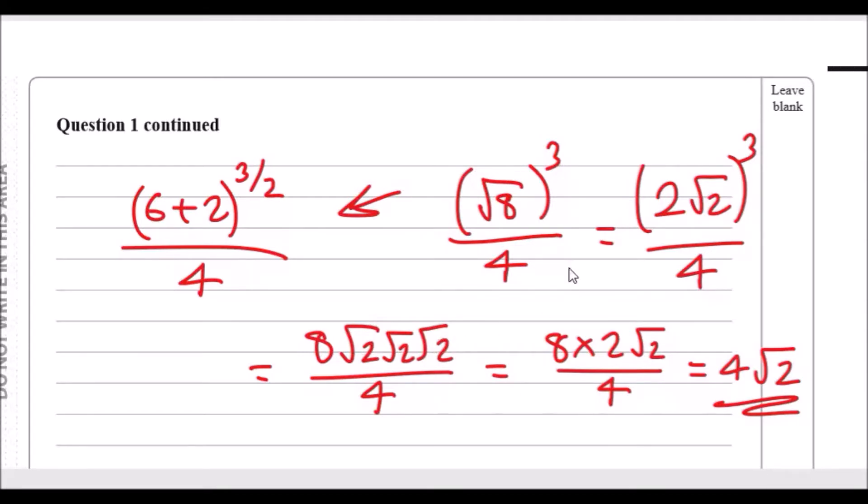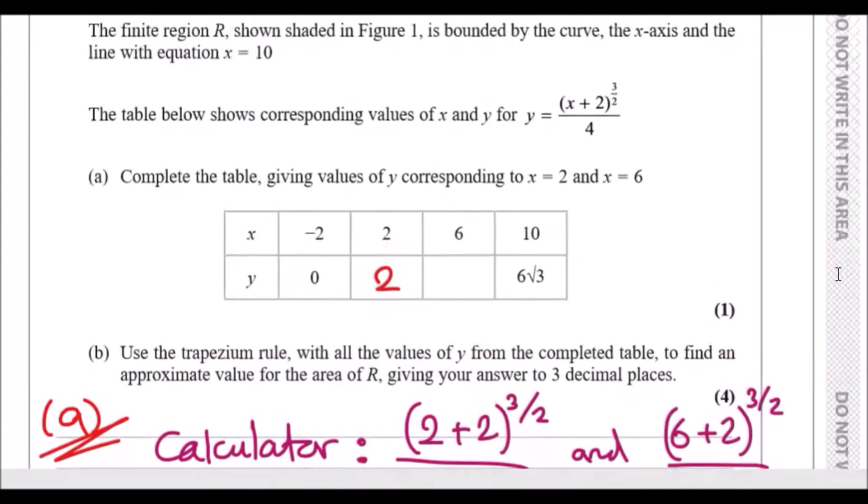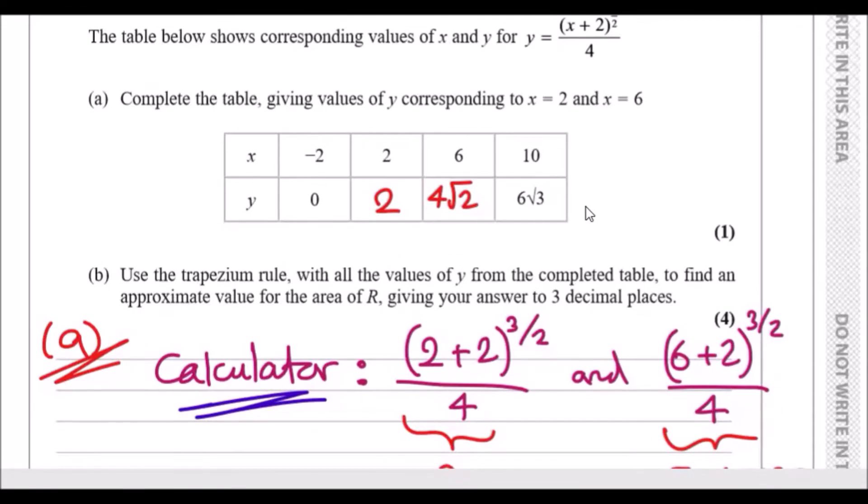One thing to note is that when you have two of the same roots, these two become a whole number. So these two become a 2, so essentially you've got 8 times 2 over 4, which is 4, and then √2 left, so 4√2. But yeah, if you guys already know how to do this that's great. This is one mark, so I don't know if this is necessary, but no big deal.